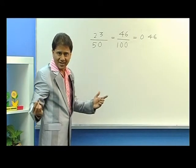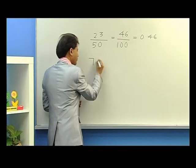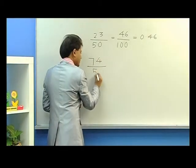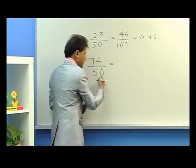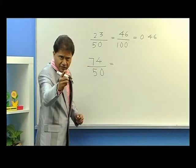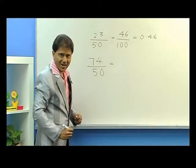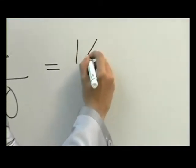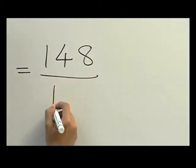Let's take another example: seventy-four over 50. Times it by two, seventy-four times two is 148 divided by hundred. You get 1.48.